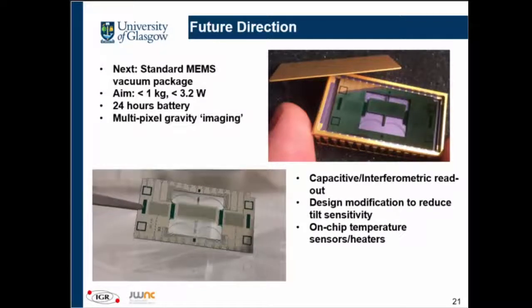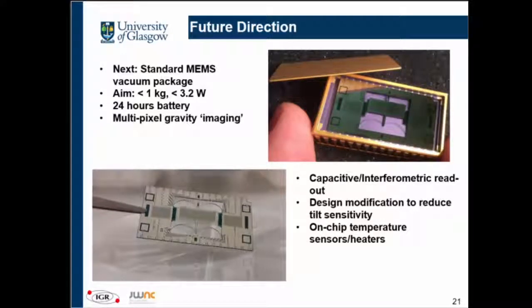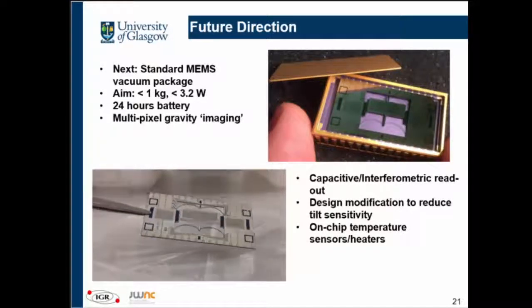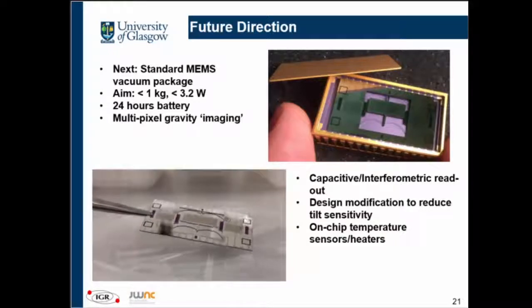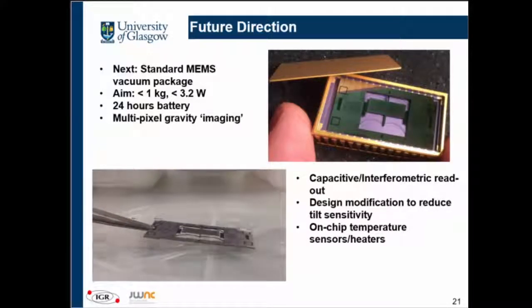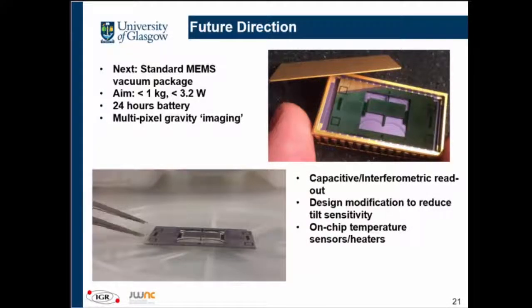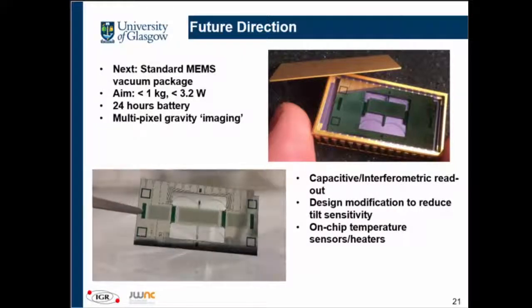For the future, we are moving away from the optical shadow sensor because there is a limit to how small we can make it. We are going towards capacitive readout. Just a few weeks ago, we fabricated our first batch of devices with this new approach, and you can see the device in action — only if I can play the video. Thank you so much.